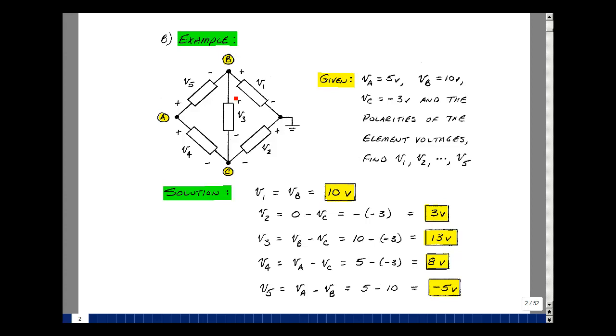Let's find element voltage V3, and that's going to be V sub B minus V sub C. V sub B was 10. V sub C was minus three, so that gives me 13. Element voltage four is between A and C. So it would be V sub A minus V sub C. V sub A is five. V sub C is minus three, and it gives me eight.